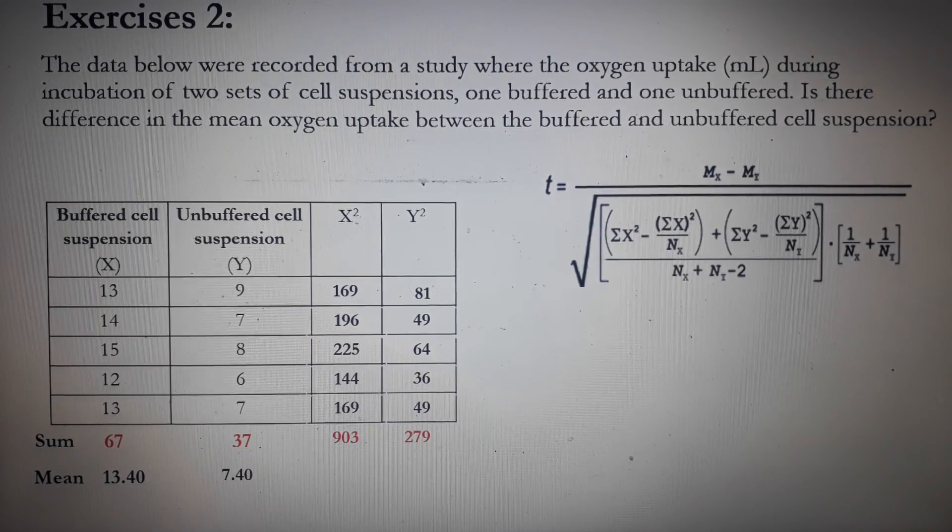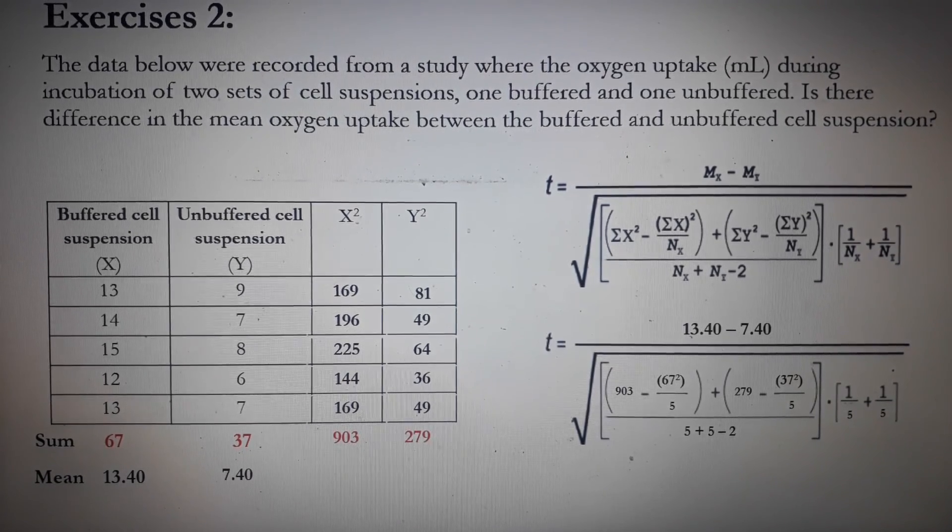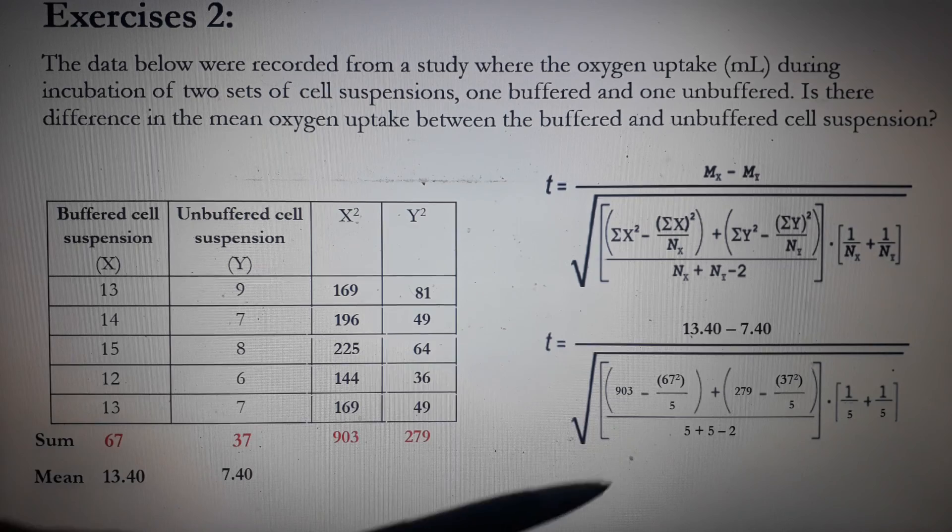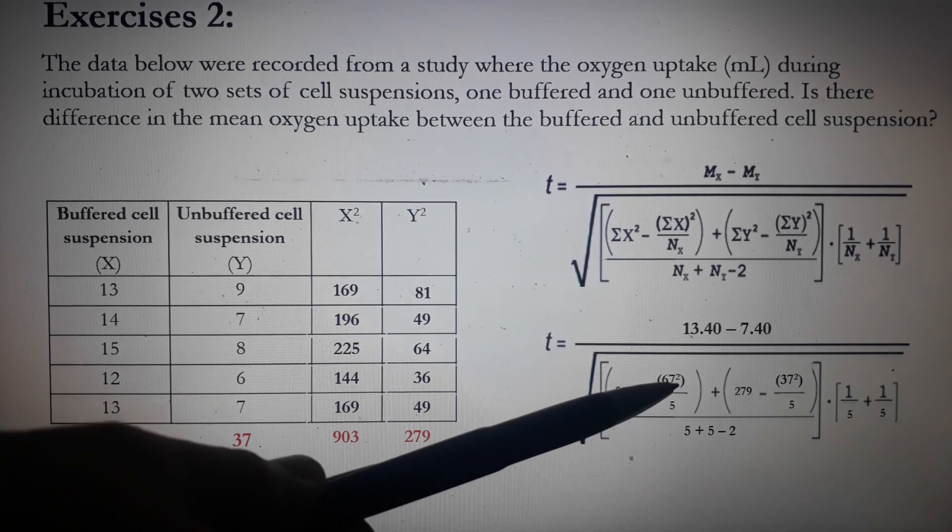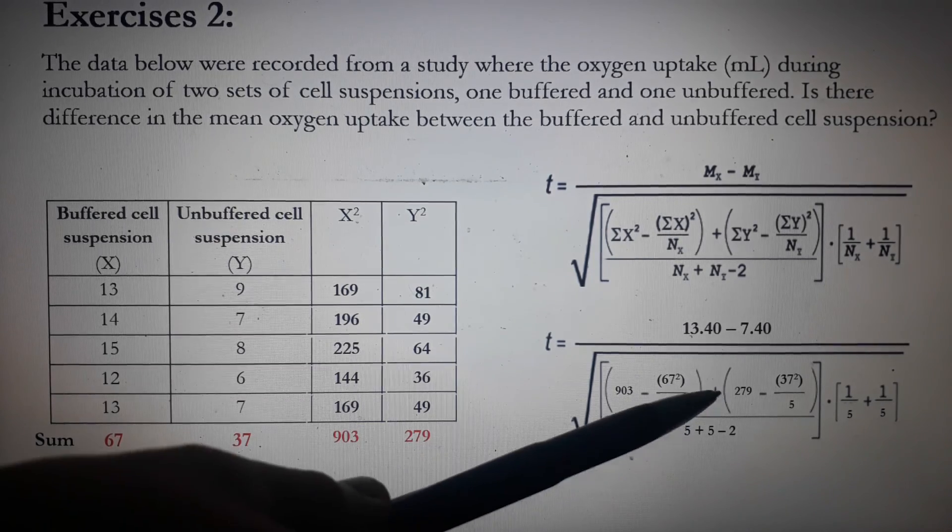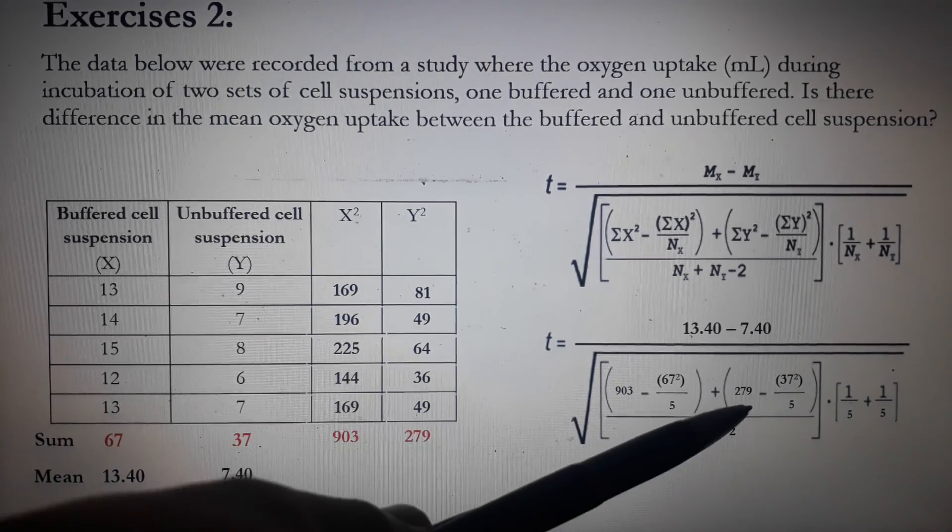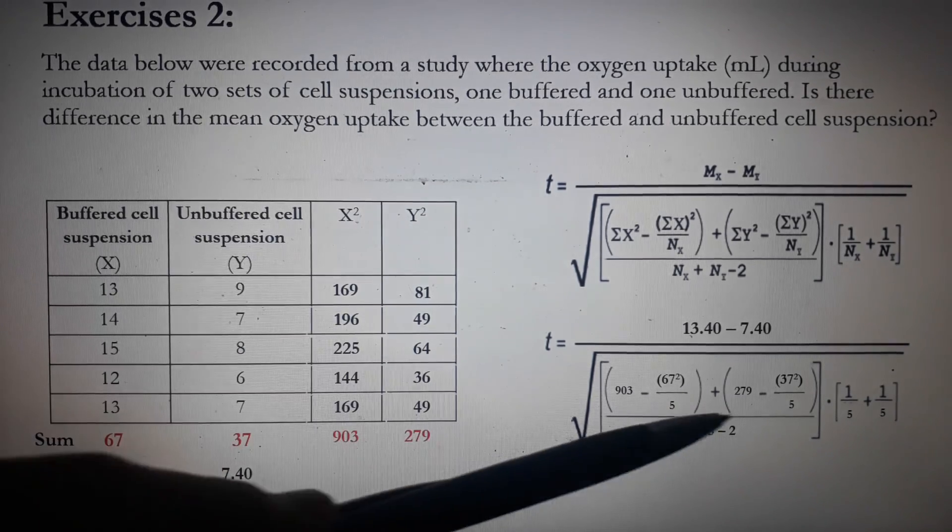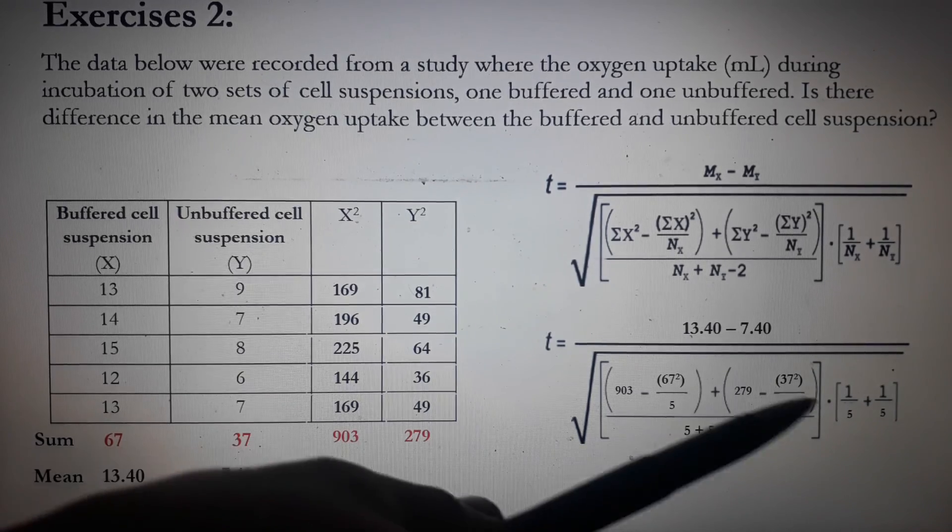So let's substitute the values to our equation. So by substitution, we have 13.40 minus 7.40 from the mean of the two groups. All over the square root of 903 came from the sum of the x squared minus 67. The 67 is the sum of the x column. You have to square over 5. Plus, you do the same procedure for the y data or y columns. So 279 came from the square of the y values minus 37 came from the sum of the y column squared over 5.